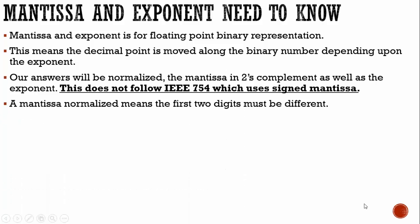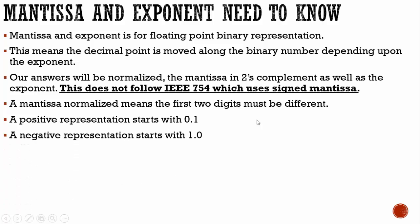A mantissa normalized means the first two digits must be different. A positive representation is going to be 0.1 with a certain amount of digits behind it depending on how many bits have been allocated to the mantissa. A negative representation is going to start with 1.0 then have a certain amount of bits behind it depending on how many bits have been allocated to the mantissa.